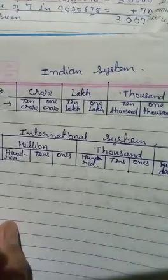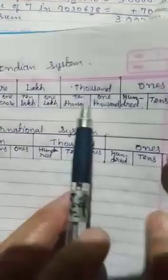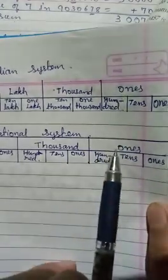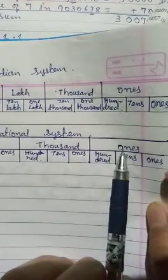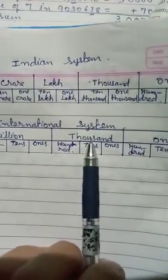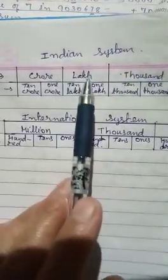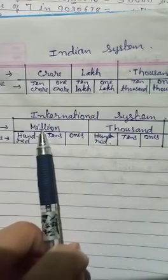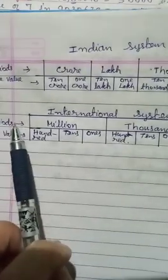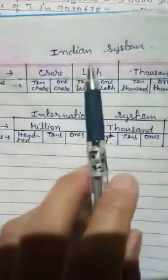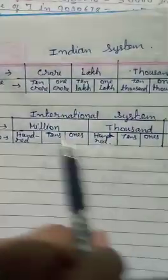In the Indian system we count inside our own country. Looking at the periods: in both Indian and international we have ones and thousands. But in Indian we have lakh and crore, whereas in international we don't have lakh or crore — we have million, and after million comes billion, then trillion. So when you see lakh and crore, that is Indian; when you see million, that is the international system.